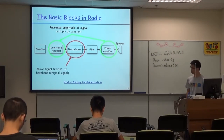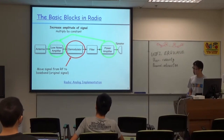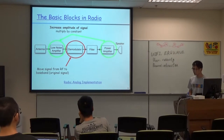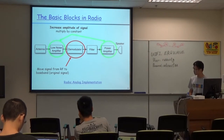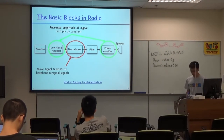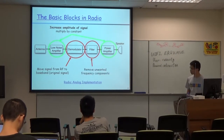The demodulator converts the signal from radio frequency to baseband. Baseband contains the original signal with useful information — you cannot transmit the baseband signal directly to air; you need to modulate it onto a carrier, which is called RF. So the demodulator converts the RF signal to baseband, and then you do processing on the baseband signal to extract the information. The filter removes unwanted frequency components to improve reception performance.